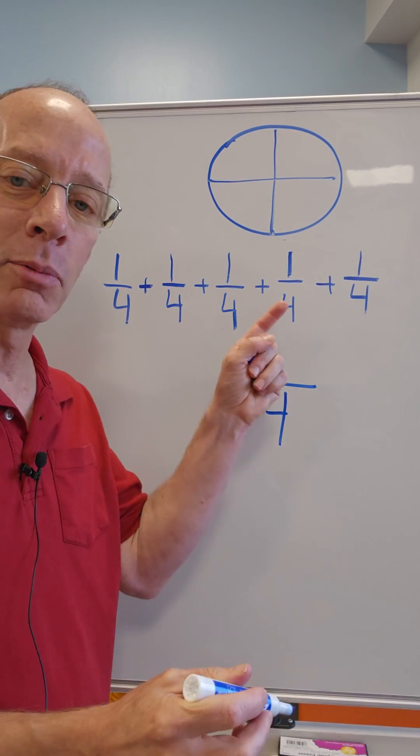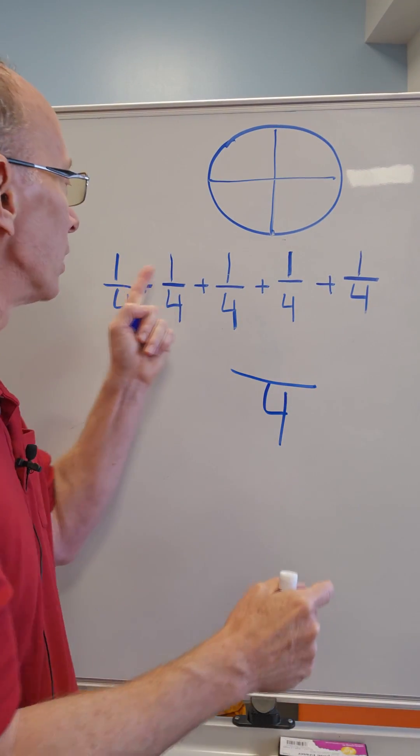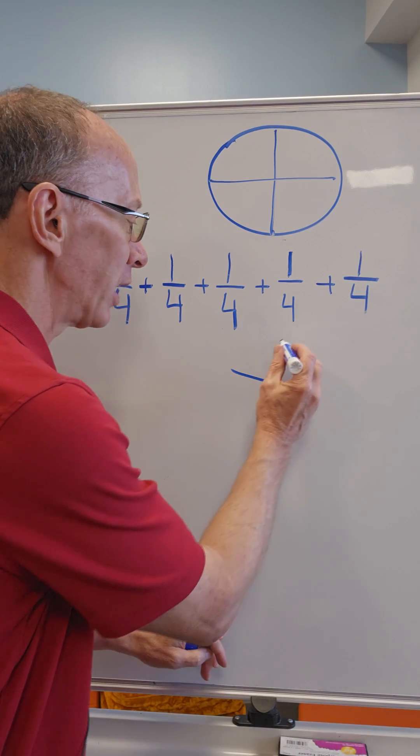Now what I do is I add the numerators. Can you count with me? Let's do it. One, two, three, four, five. So I put five right here.